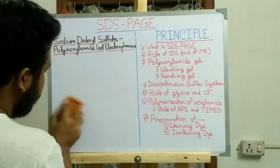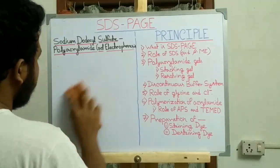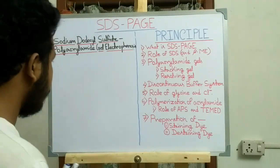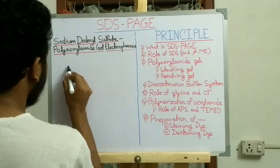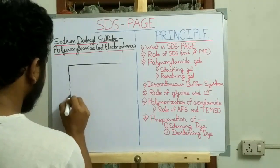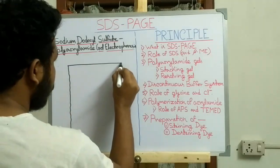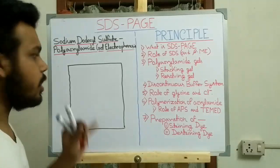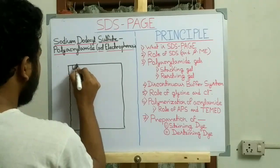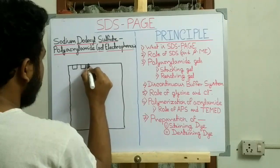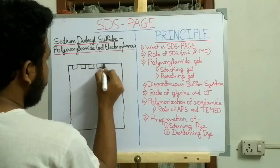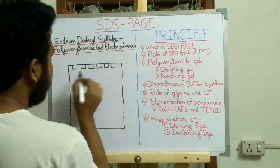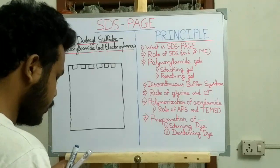Now, what is the polyacrylamide gel, and what are the stacking gel and resolving gel? We use two types of polyacrylamide gel: the stacking gel and the resolving gel. Remember that SDS-PAGE is run vertically.